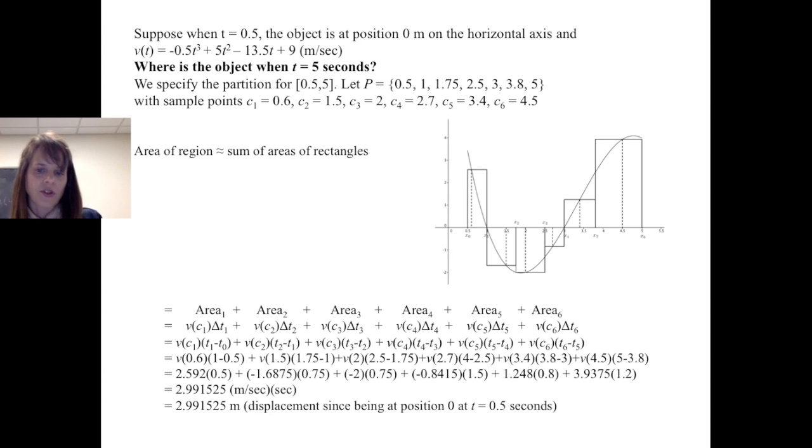So in other words, starting in position 0, using these rectangles to approximate the displacement, we get a displacement of 2.991525. So after 5 seconds, when we started at half a second at position 0, we're approximately almost 3 meters away.